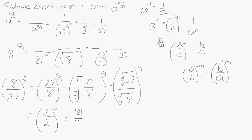So that's how to evaluate expressions with the form a to the negative m over n. I hope that this helps you out. If you have any comments, please feel free to leave them.